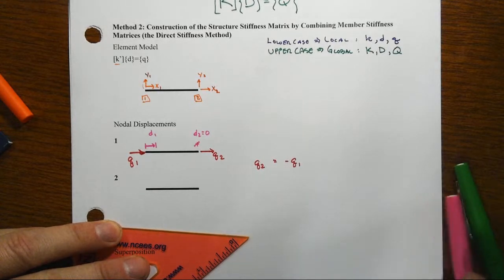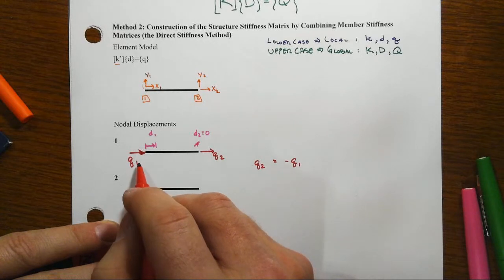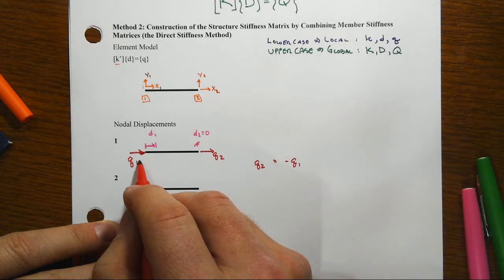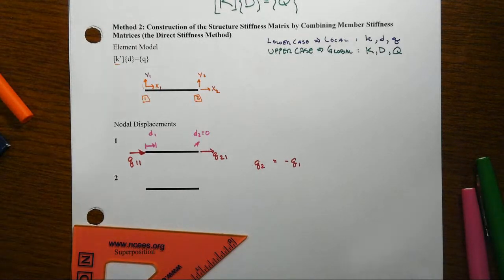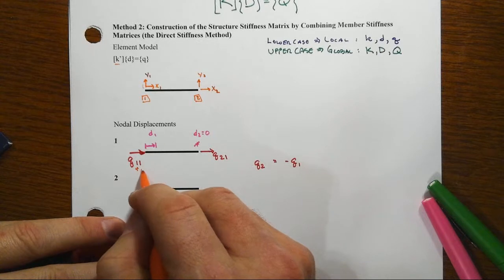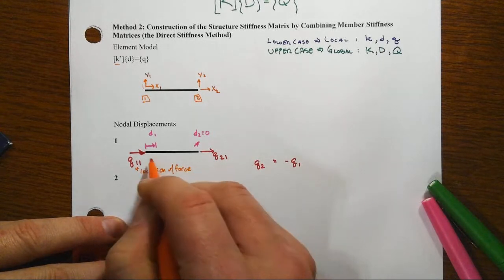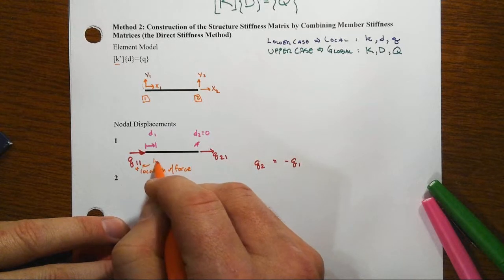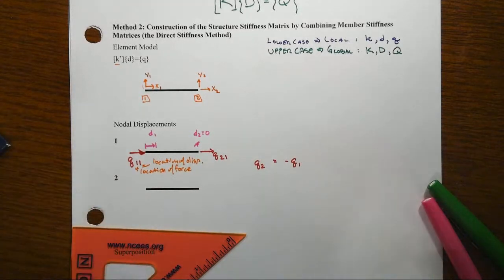Now, because we're going to be adding some things up, let's add another subscript here: q1,1 and q2,1. So the first subscript is location of the force. And the second is the location of the displacement.